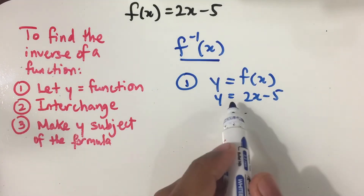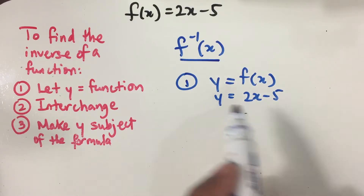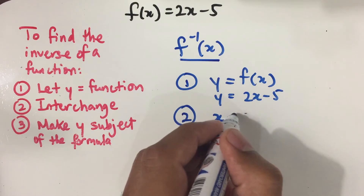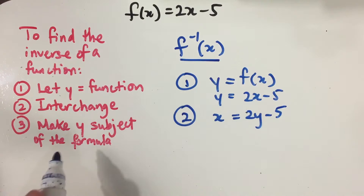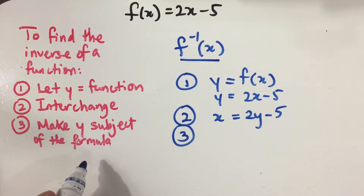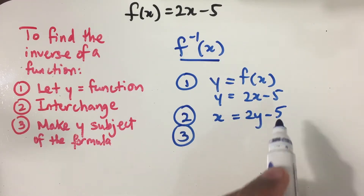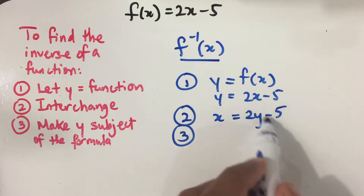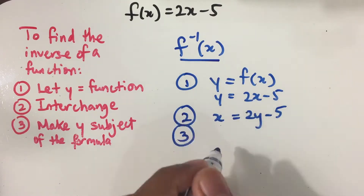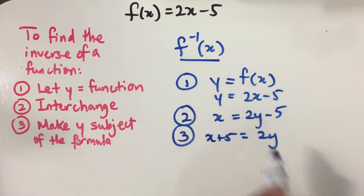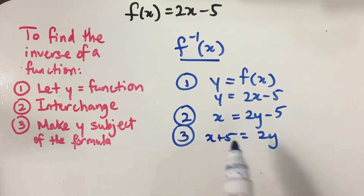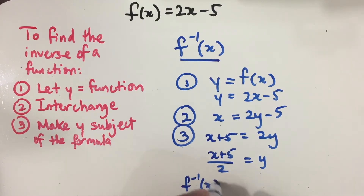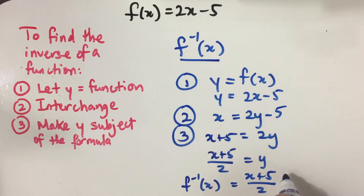The second step is to interchange: wherever we see y, we put x, and wherever we see x, we put y. So then x = 2y - 5. The third step is to make y the subject of the formula. We get rid of the -5 by bringing it to the left-hand side, giving x + 5 = 2y, then divide both sides by 2. So f⁻¹(x) = (x + 5) / 2.